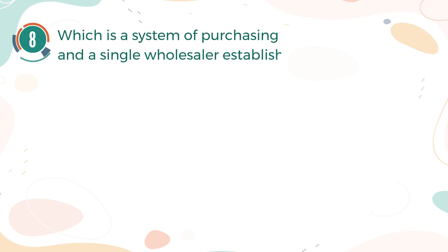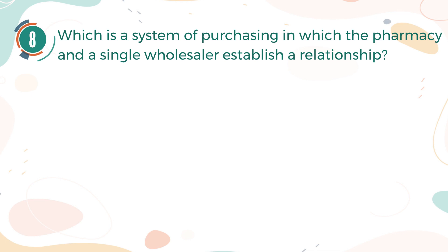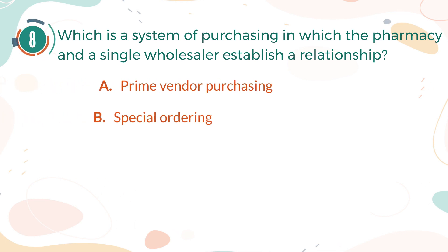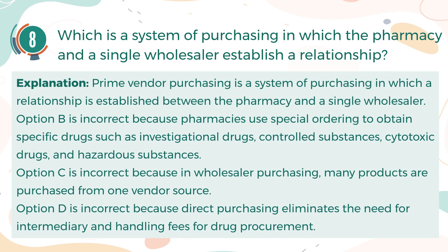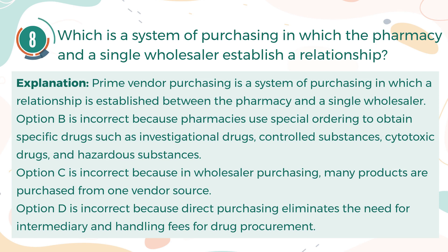Number 8. Which is a system of purchasing in which the pharmacy and a single wholesaler establish a relationship? A. Prime Vendor Purchasing. B. Special Ordering. C. Wholesaler Purchasing. D. Direct Purchasing. The correct answer is A, Prime Vendor Purchasing. Explanation: Prime Vendor Purchasing is a system of purchasing in which a relationship is established between the pharmacy and a single wholesaler. Option B is incorrect because pharmacies use special ordering to obtain specific drugs such as investigational drugs, controlled substances, cytotoxic drugs, and hazardous substances. Option C is incorrect because in wholesaler purchasing, many products are purchased from one vendor source. Option D is incorrect because direct purchasing eliminates the need for intermediary and handling fees for drug procurement.